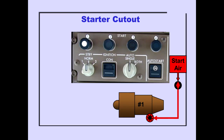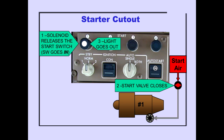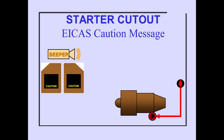At starter cutout, the start switch solenoid releases the start switch and the switch springs back to the end position. Starter cutout occurs as N2 RPM increases past 50%. The light extinguishes when the start valve closes. The ICAS caution message, starter cutout, is displayed when N2 RPM increases past 50% and the start valve fails to close.